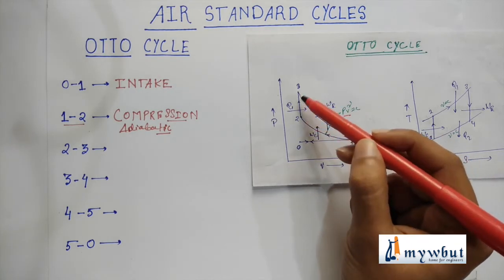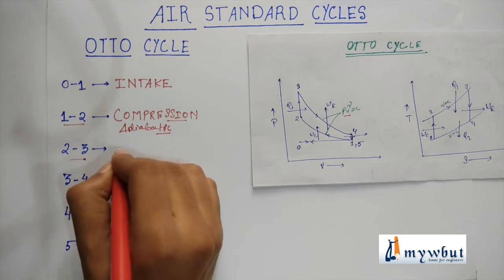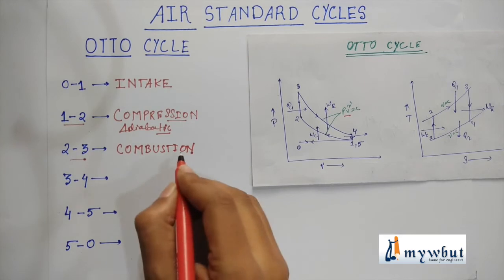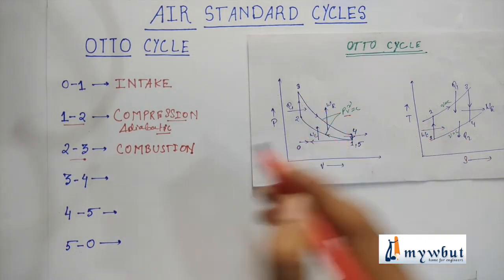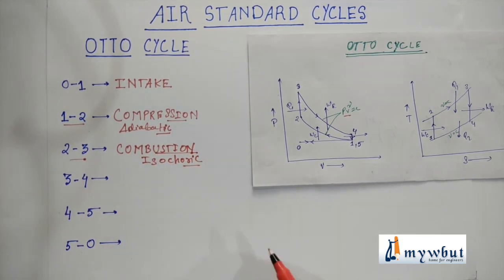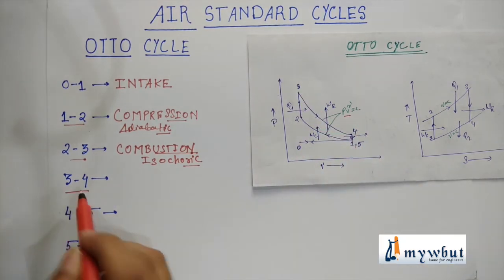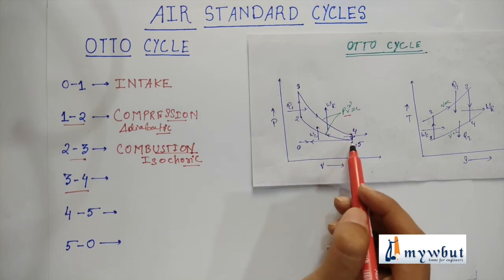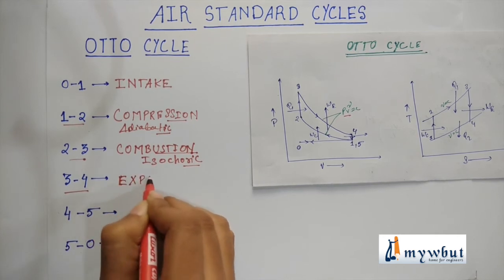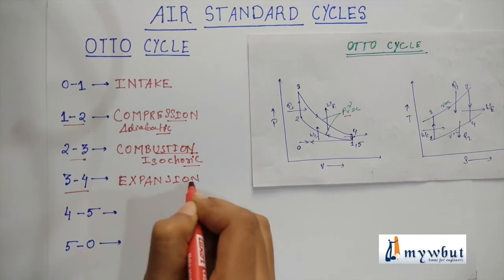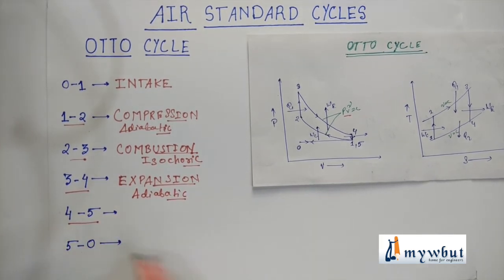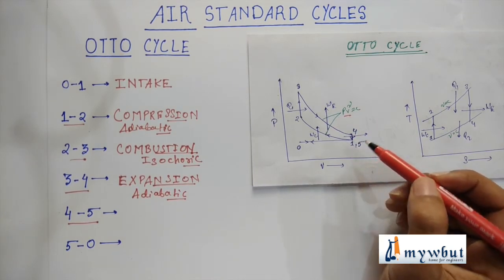The process 2 to 3 is the heat addition or combustion process. As you can see, the volume remains constant, hence this process is an isochoric process. The process 3 to 4 is the opposite of 1 to 2 — it is also an adiabatic process and is known as the expansion process. The process 4 to 5 is also an isochoric process and is known as the blow-off process.